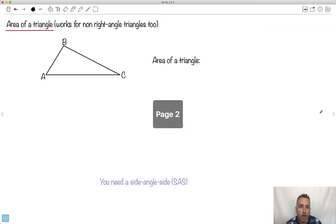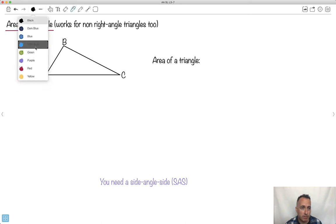Now what happens if it's not right angle? This is going to work for also non-right angle triangles. We're going to have to name our sides. Capital B becomes lowercase b, capital A becomes lowercase a, and this one is c.